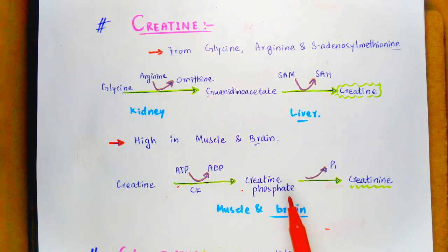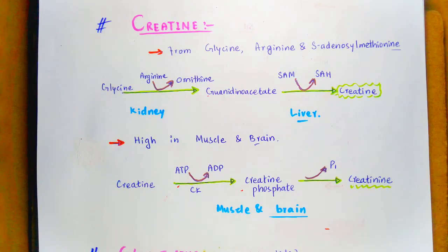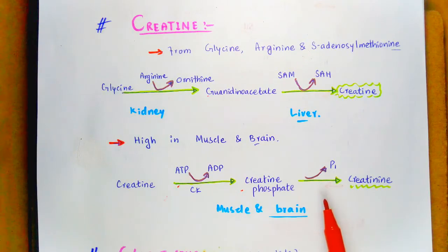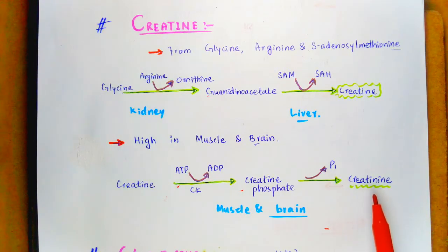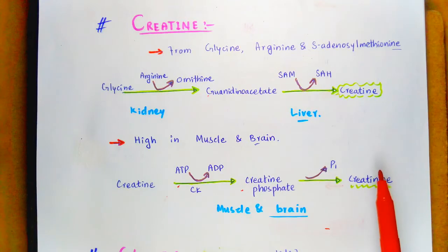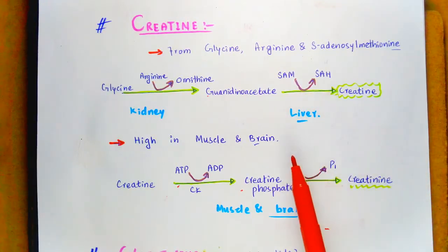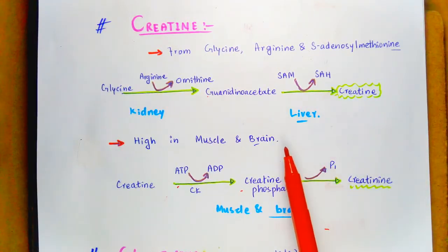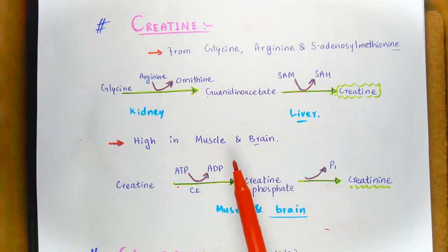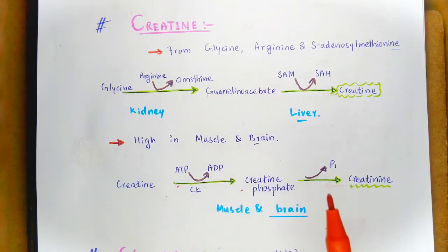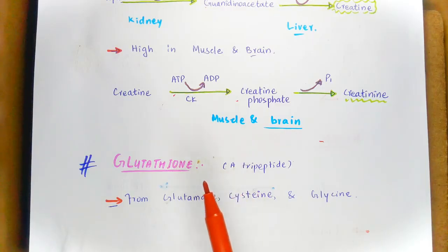Creatine provides a small reservoir of high-energy phosphate, particularly during the early stages of exercise. The creatine phosphate then spontaneously cyclizes forming creatinine, which is excreted out by the kidney. This is the small description, the reaction step, and a few main functions of creatine within the body.